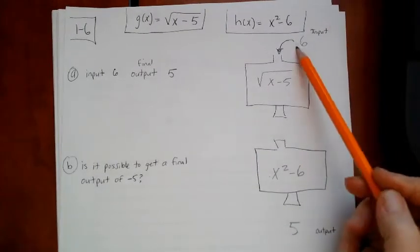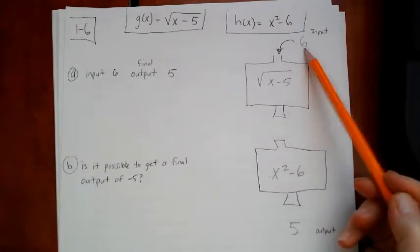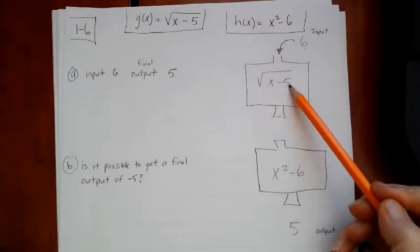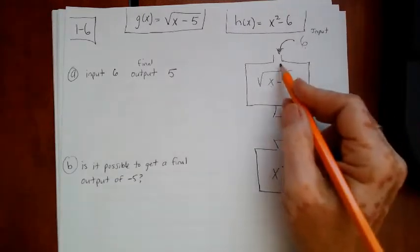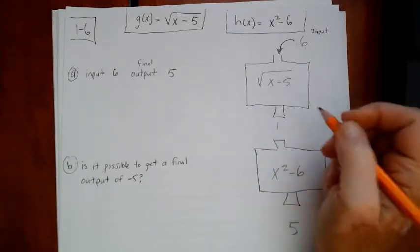And now I'm going to start plugging. I had to start with 6. So 6 minus 5 is 1. And the square root of 1 is 1. So from the top machine, the outcome is a 1.